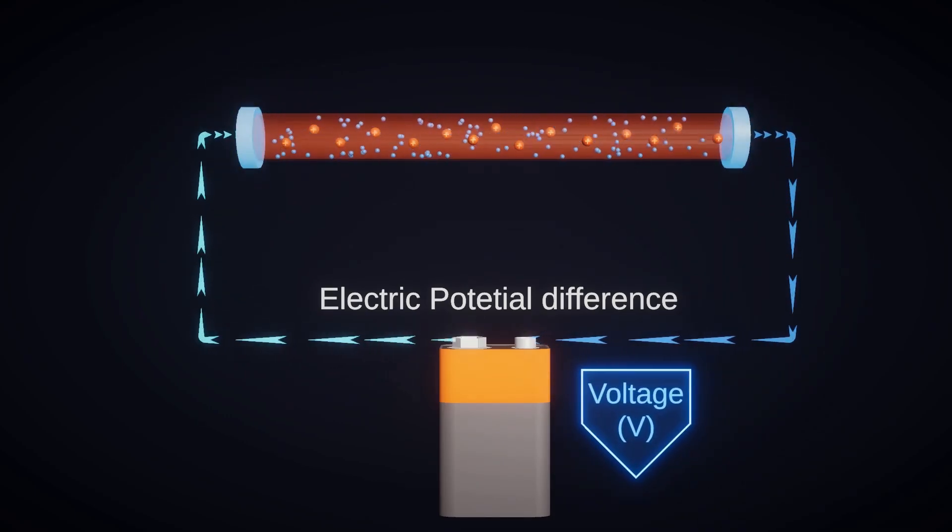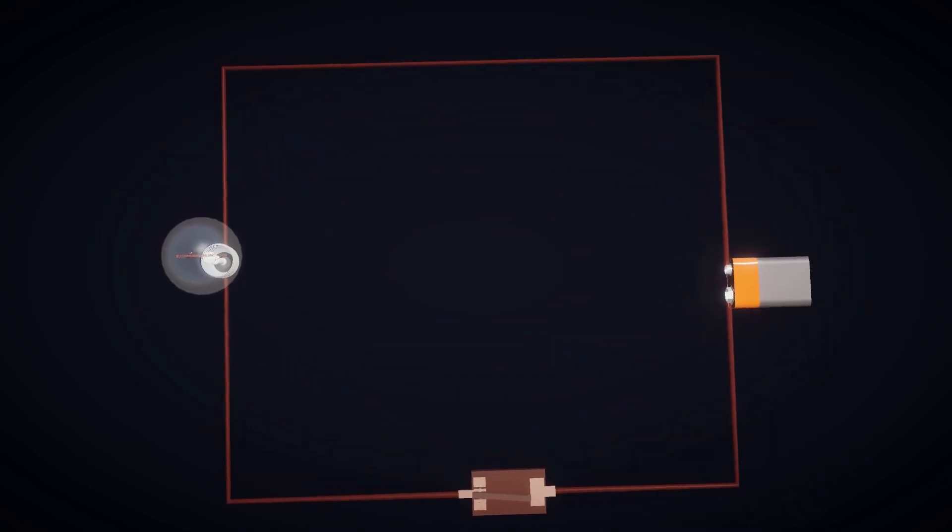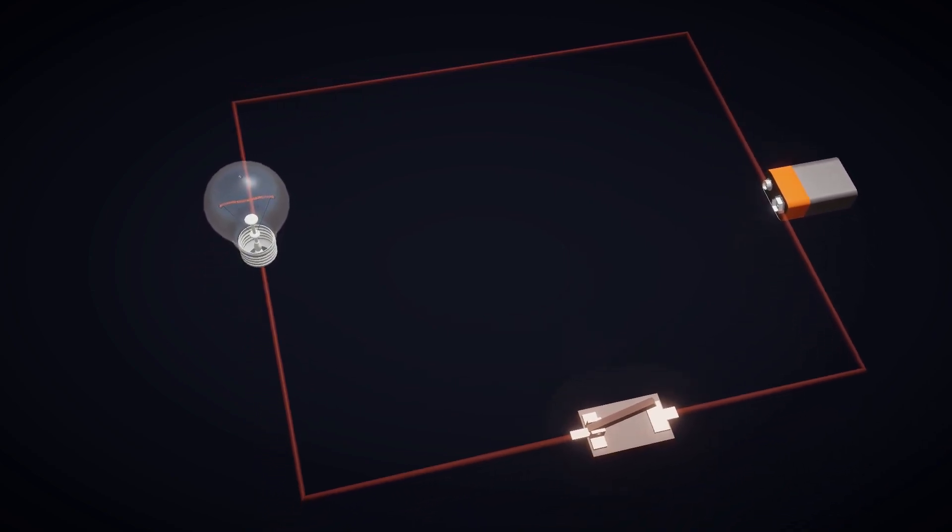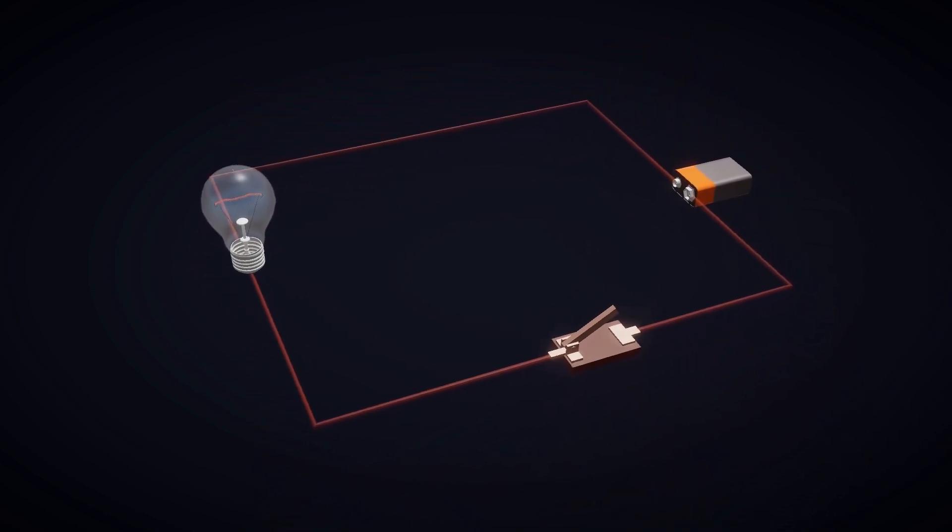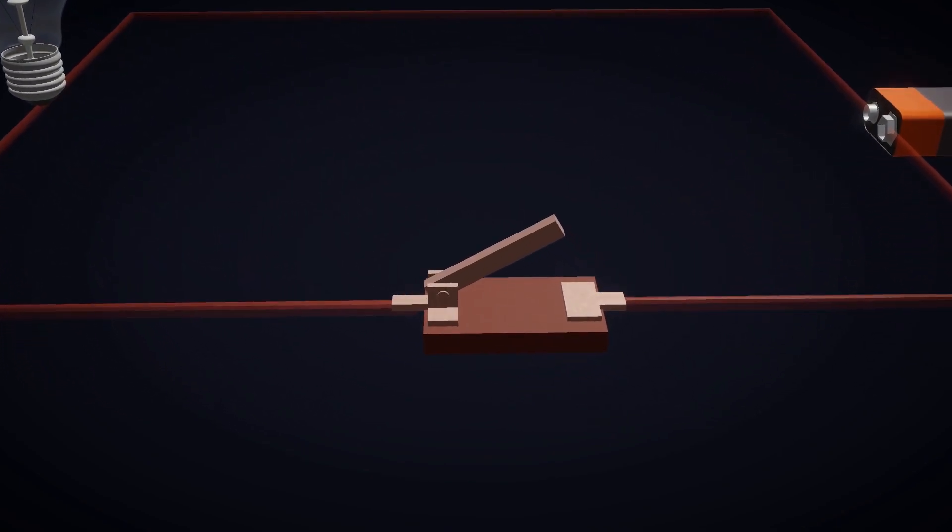Let's understand in detail. As we can see in the animation, there is a simple electric circuit with an electric bulb connected through a wire to a 5-volt battery. Additionally, there is a switch in series to turn the circuit on and off.